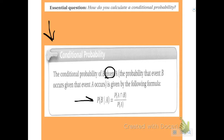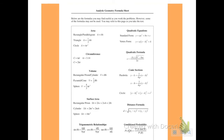Here's our set notation: the probability of B given the probability of A. You find that by taking the intersection of A and B divided by the probability of A. Notice this is our formula sheet and we do have the conditional probability formula on our formula sheet at the lower right-hand corner.